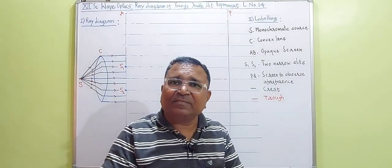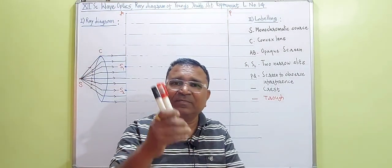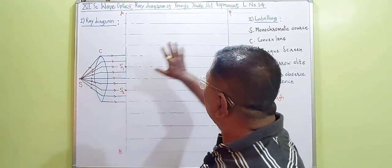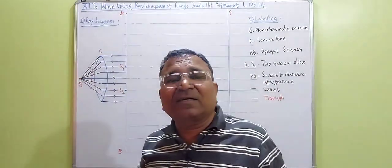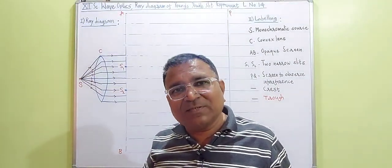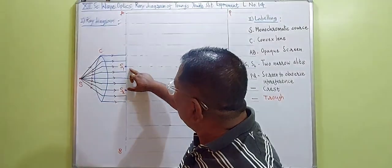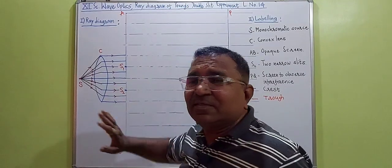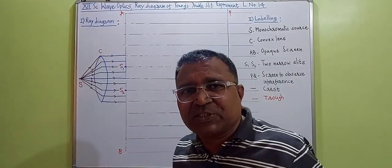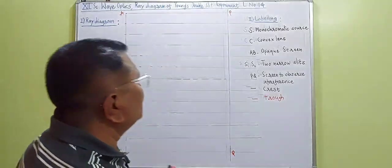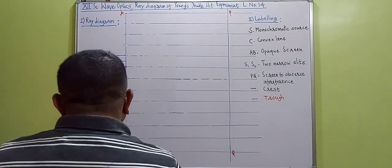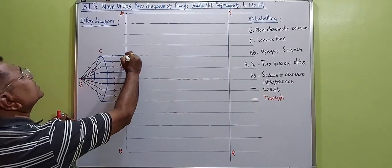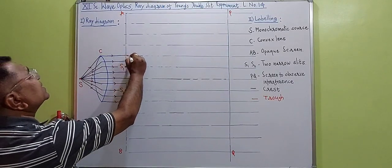Take two pens — this is a black pen, this is a red pen. I'm sure you have done all the pre-settings. Take two coherent sources S1 and S2 by leaving one line between them on your notebook page. Now draw the crest first by taking S1 as the source — draw one crest like this.